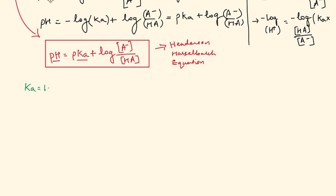Ka is given as 1.8 times 10 to the power minus 5. A minus concentration is given to us as 0.5 molar, and HA is given to us as 0.2 molar.